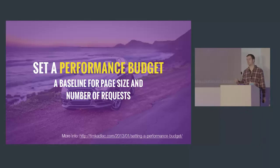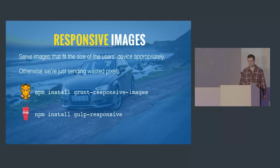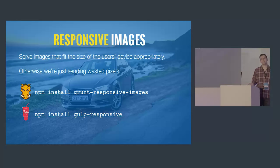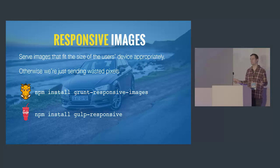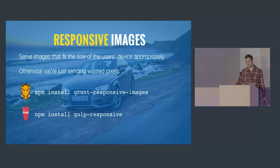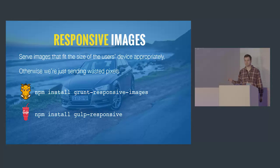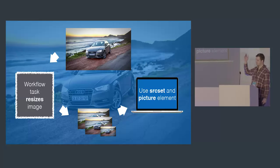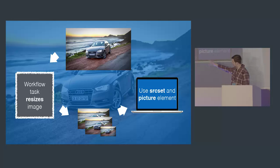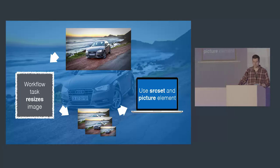If we look at tasks available in our workflow, let's start with responsive images. There's no point serving a 2000-pixel-wide image to a mobile phone — we're just sending wasted pixels. There's a task available for both Grunt and Gulp that will take an image and output smaller images in a variety of sizes, which we can then use with the srcset attribute or the picture element.